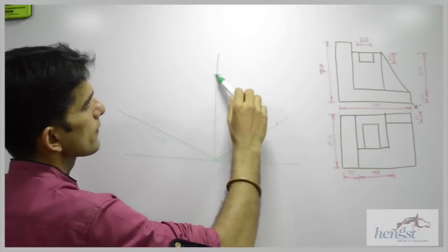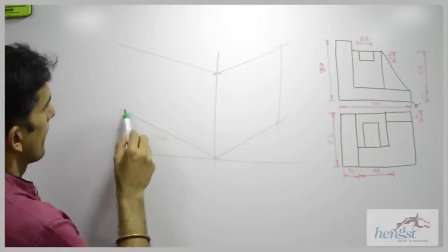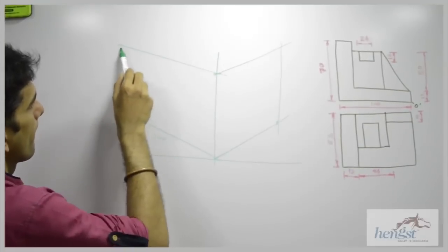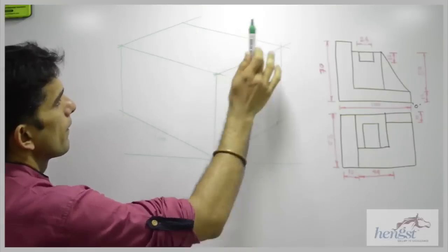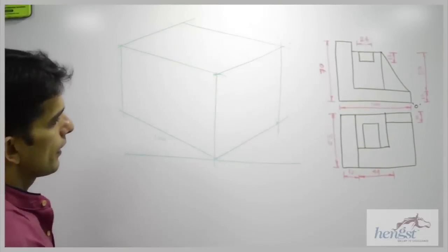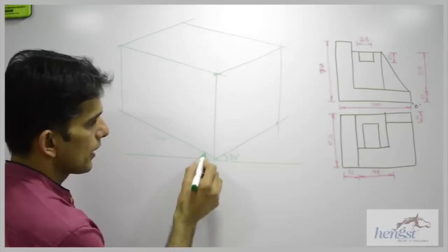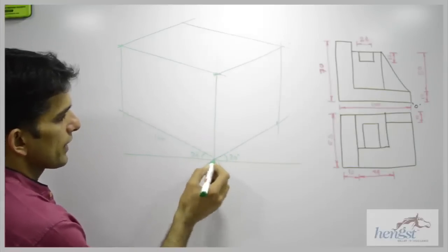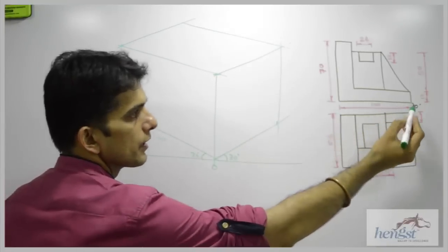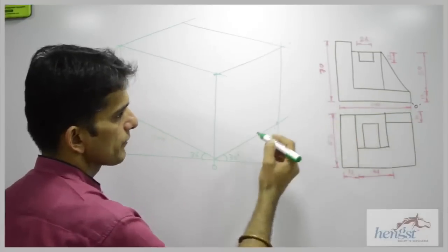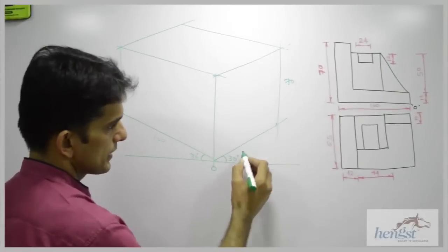First we will draw a box. After drawing this box, see this is the origin, this is 30. I have taken 100 on the left side of the origin because we have 100 on the left side of the origin. Then height is 70 and width is 65.